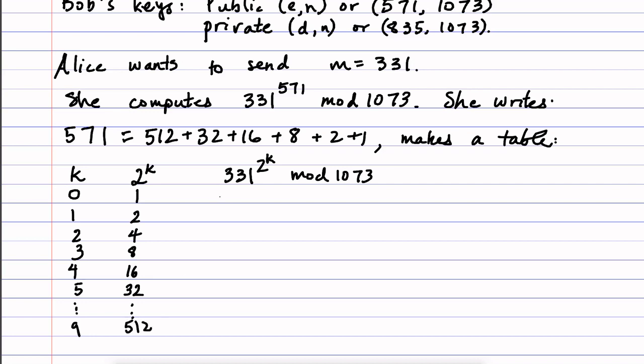And then over here we just start taking powers. So 331 raised to the power of 1 is 331. And then on the next line you square it, and mod 1073 you get 115. And next line you square it again, and mod 1073 you get 349.